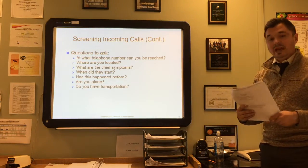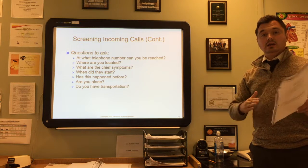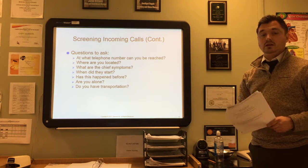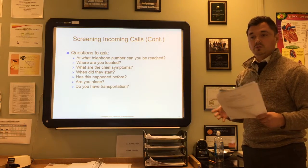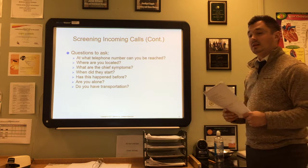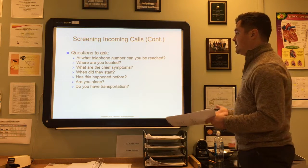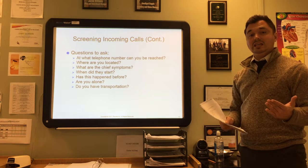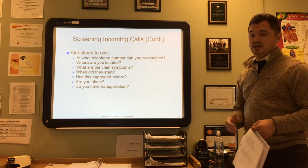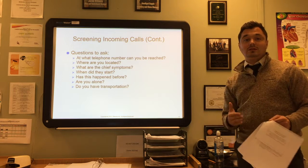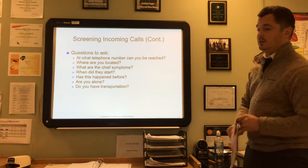When handling an emergency call, never hang up. If you have another person on hold, transfer over and tell them you have an emergency on the other line and they'll need to continue holding or call back later. Get the caller's name right away. Ask: What telephone number can they be reached at if disconnected? Where are they located? What are their chief symptoms? When did they start? Has this happened before? Are they alone? Do they need transportation? Get all this information, activate EMS, relay the answers to them, then stay on the line until EMS arrives at their side.